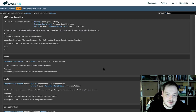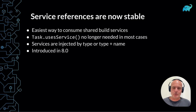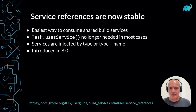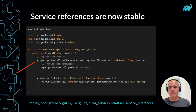Speaking of APIs, there is another update: service reference properties, which are now stable. Rafael will present what this means and give a short demo. In this release, we are promoting service reference properties to stable. Service references were introduced in an earlier Gradle version and they are the easiest way of consuming shared build services. One of the benefits is that you no longer need to explicitly declare that your task uses some service — that's done automatically for you.